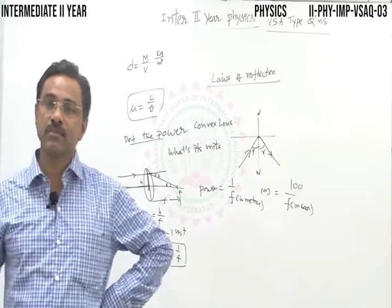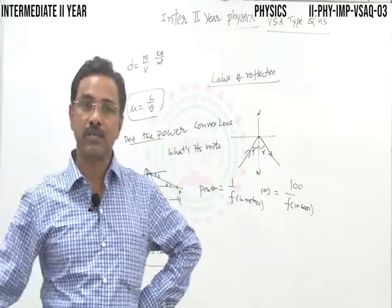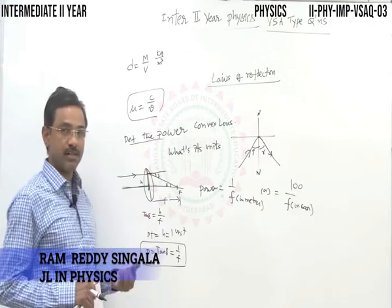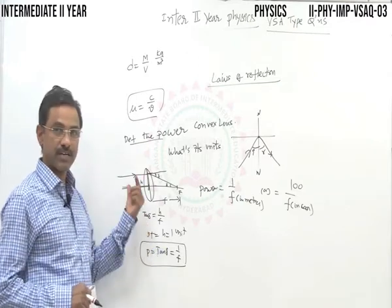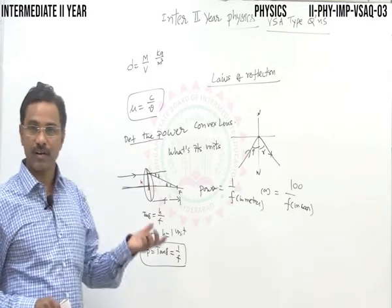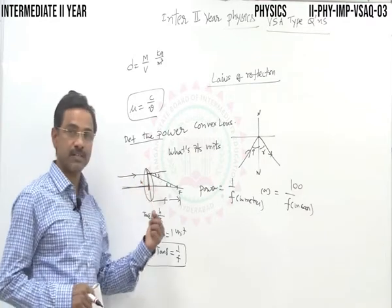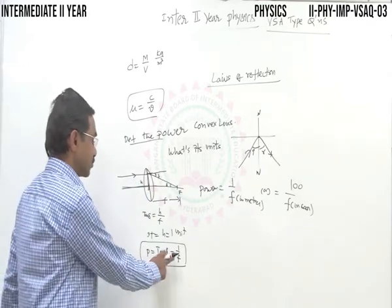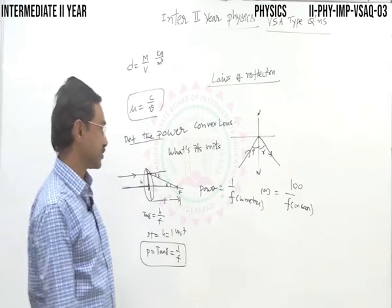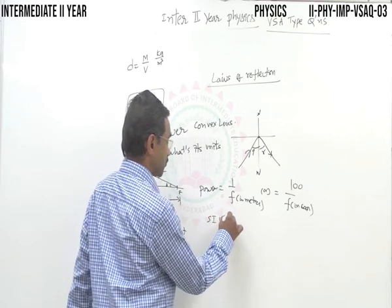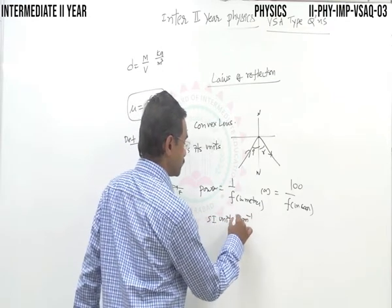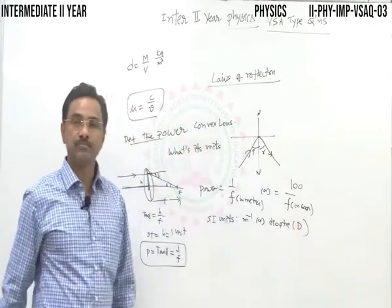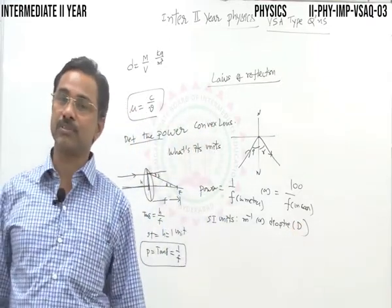The reciprocal of focal length expressed in meters is numerically equal to the power. The better refined definition: the power of a lens is defined as the tangent of the angle through which convergence or divergence takes place when a ray of light is incident at unit distance from the optical center. Its SI units are meter inverse, also called diopter, denoted by D.